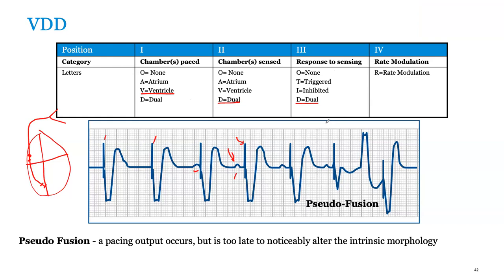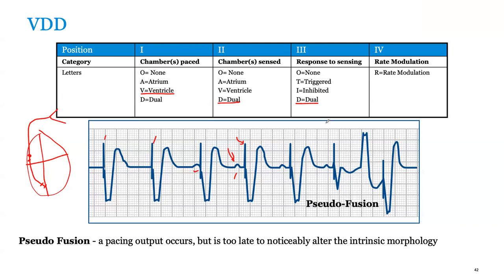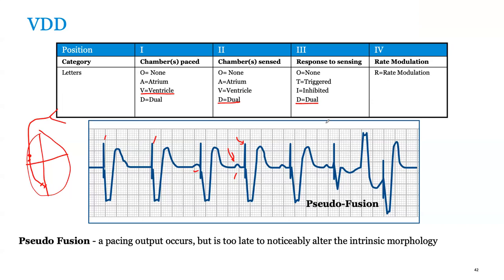Medtronic also makes single-pass leads for VDD. These have been used for complete heart block in older patients. VDD systems do have a higher rate of dislodgement or under-sensing. If that happens, you simply convert it to VVI. VDD pacing has complex timing cycles that we'll go over at a later date. The key concept is that it allows you to pace the ventricle or modulate the rate based on what's sensed in the atrium.